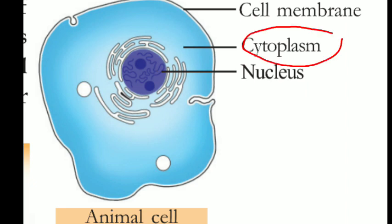What is cytoplasm? Cytoplasm is the fluid filled inside the cell — a jelly-like substance filled in the cell. Cytoplasm is a fluid.